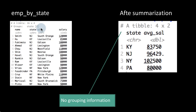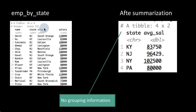Notice a slight difference: before summarization, emp_by_state had four groups, grouped by state. But once you perform the summarization on that, the resultant tibble has no groups, because essentially the grouping has been unraveled. Every state has been reduced to one row and there are no more groupings left. That is why this tibble, if you see the result, doesn't have any grouping information on it.